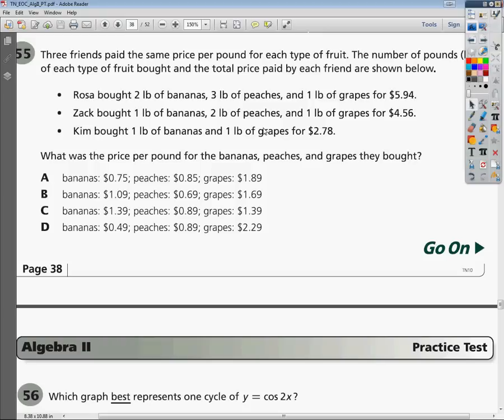Long story short is that since we have three different fruits and different prices, we're going to do a system of equations with three variables.